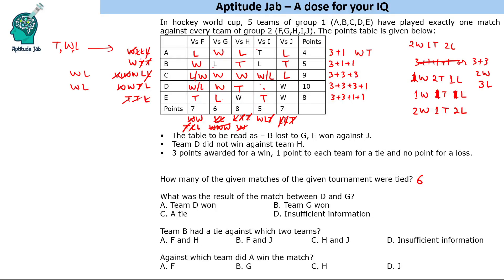The rest can be filled except those four ambiguous matches. To summarize the answers: How many matches were tied — six tie matches. What was the result of the match between D and G — D is the winner. Team B had tie matches against which two teams — B had ties against H and J. Against which team did A win — A won the match against team G. That is the complete solution to this set.